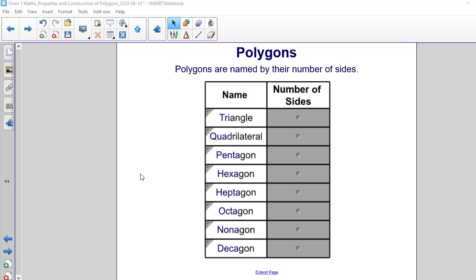Polygons are named by their number of sides. The first eight named polygons are as follows: a triangle, a quadrilateral, a pentagon, a hexagon, a heptagon, an octagon, a nonagon, and a decagon.